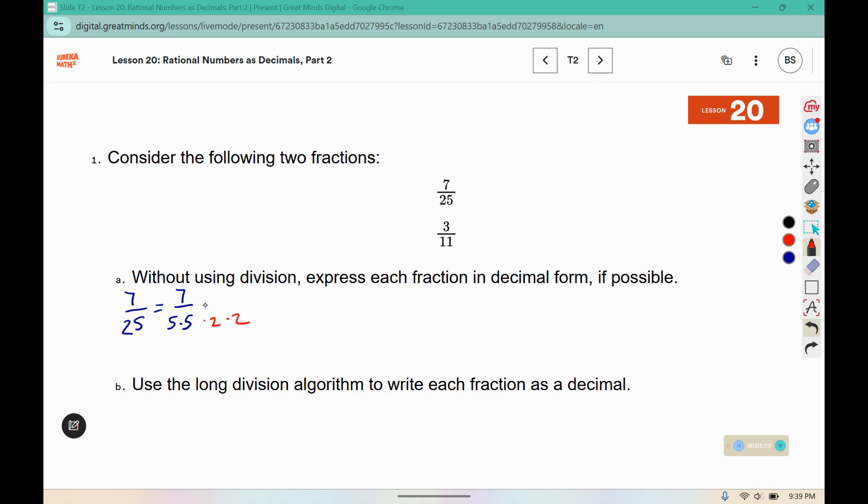So since I have two fives, I need two twos to be multiplied in to turn them both into tens. This would be a 10 and this would be a 10. 10 times 10 is 100. 7 times 2 is 14. 14 times 2 is 28. So this is 0.28.